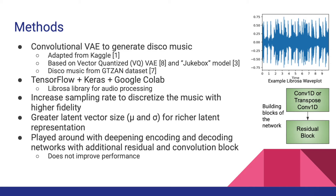We obtained the disco music in the form of WAV files from the GTZAN dataset, which is a dataset specifically created for music genre classification. For coding, we used TensorFlow, Keras, as well as Google Colab for GPU access. The Librosa library was instrumental for audio processing — it allowed us to sample music, quantizing it into a vector, as well as visualizing it.